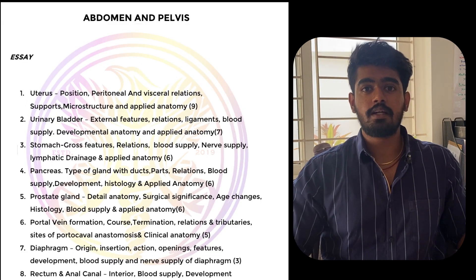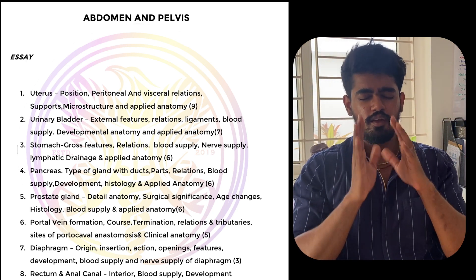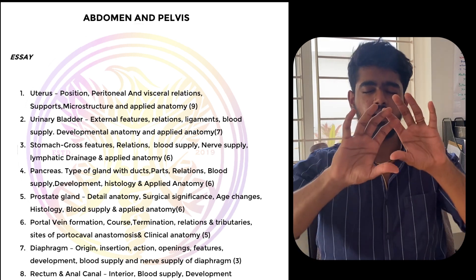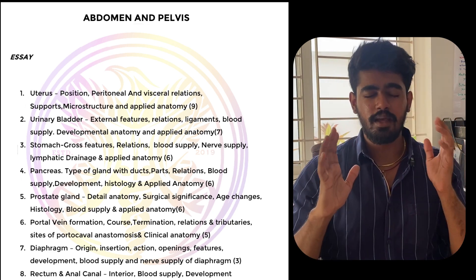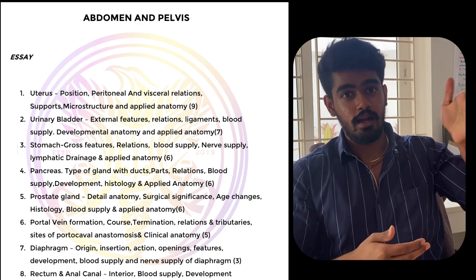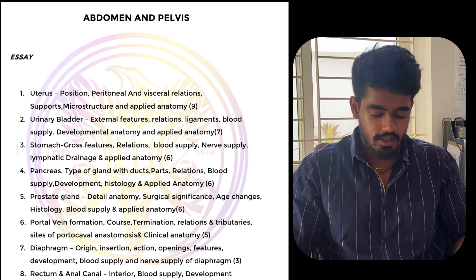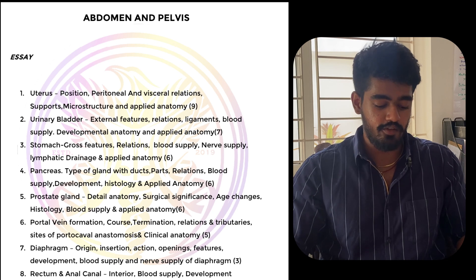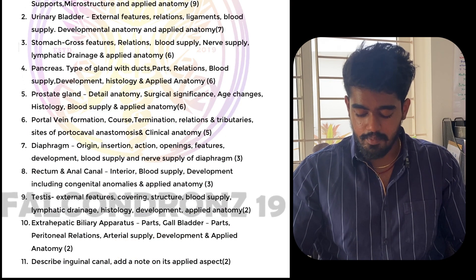Coming to abdomen and pelvis — you have to know all the organs and their anatomy properly, including the peritoneum. You should be able to visualize the anatomy: if you cut open the abdomen, what you see, you should be visualizing — liver, gallbladder, intestines. Uterus is critically important; study the relations and retroversion carefully. Important essay topics include: urinary bladder, stomach, pancreas, prostate gland, portal vein, diaphragm, rectum and anal canal, testes, extrahepatic biliary apparatus, and inguinal canal. For the diaphragm, know the three openings and the contents of each, as that will be asked in MCQs.